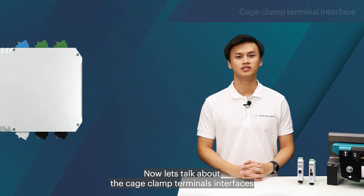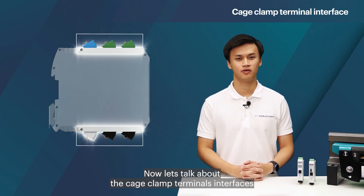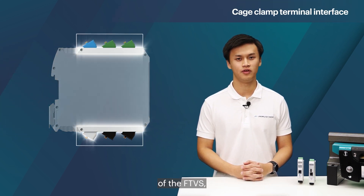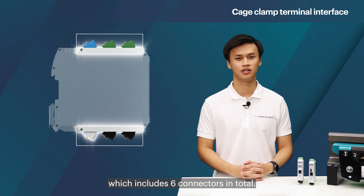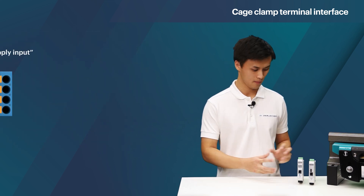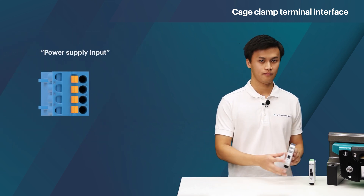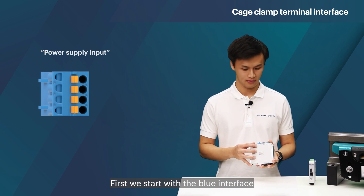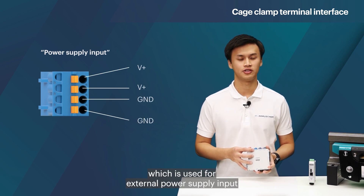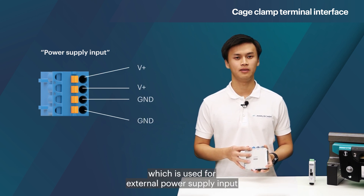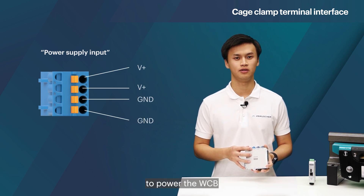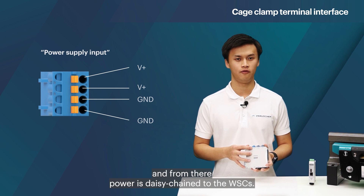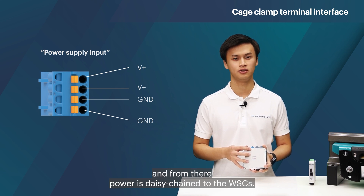Now let's talk about the cage clamp terminal interfaces of the FTVS, which includes six connectors in total. First we start with the blue interface, which is used for external power supply input to power the WCB, and from there power is daisy chained to the WSCs.